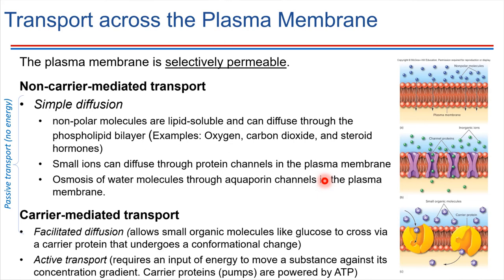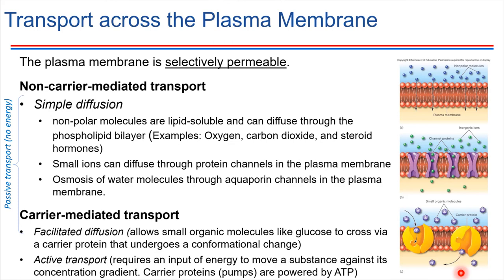Another type of transport that can happen across the plasma membrane is what we would call carrier-mediated, which implies that there's some sort of carrier protein involved. A great example is facilitated diffusion of glucose. When glucose is transported into a cell, there is a protein — shown in yellow here — and the glucose molecule binds to the protein. The protein then undergoes a conformational change, which causes the other side to open up, allowing the glucose molecule to get through to the other side of the plasma membrane.